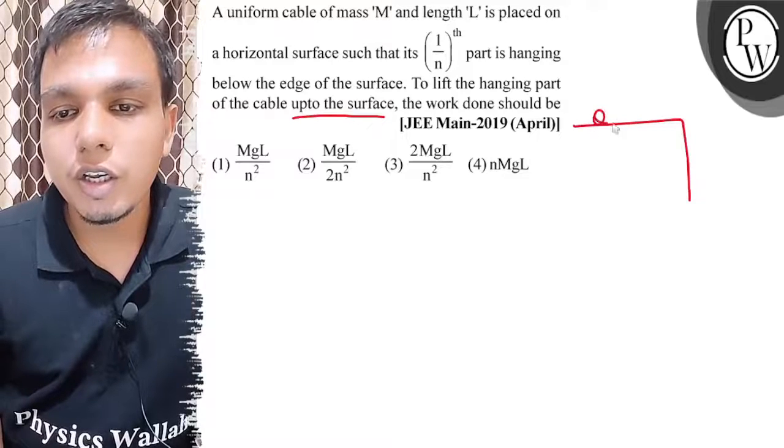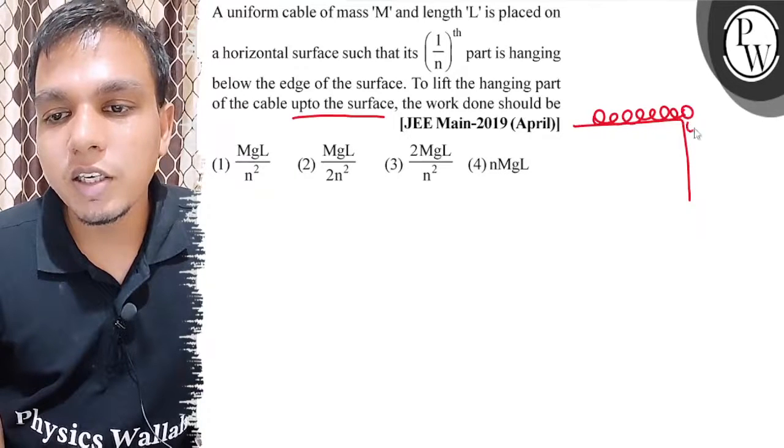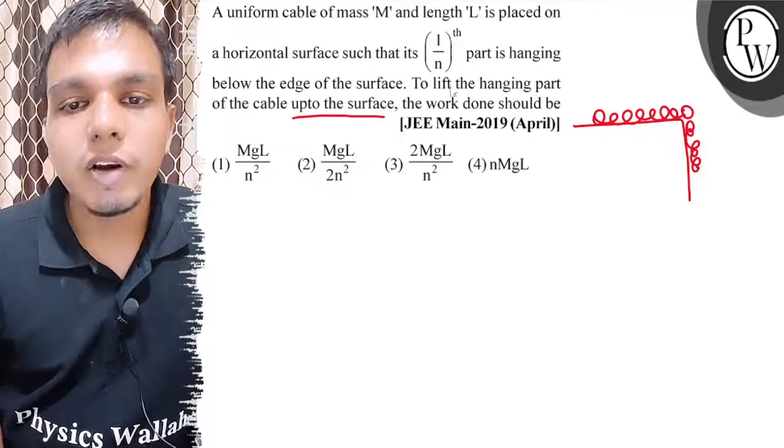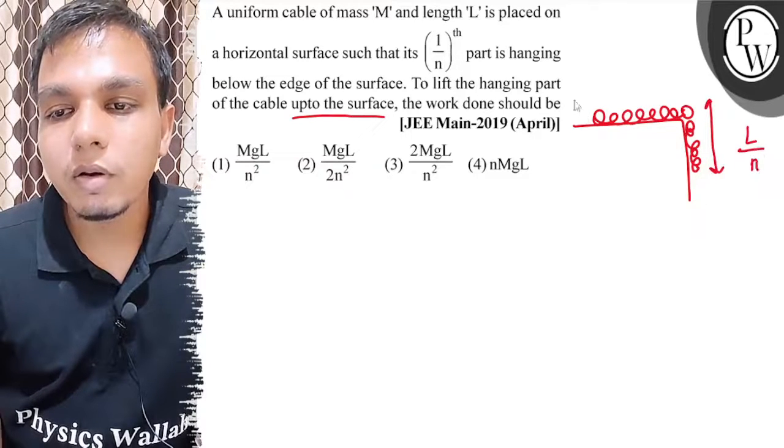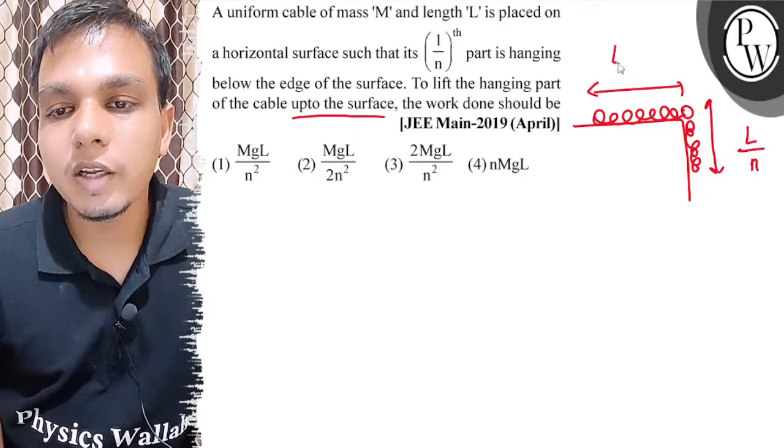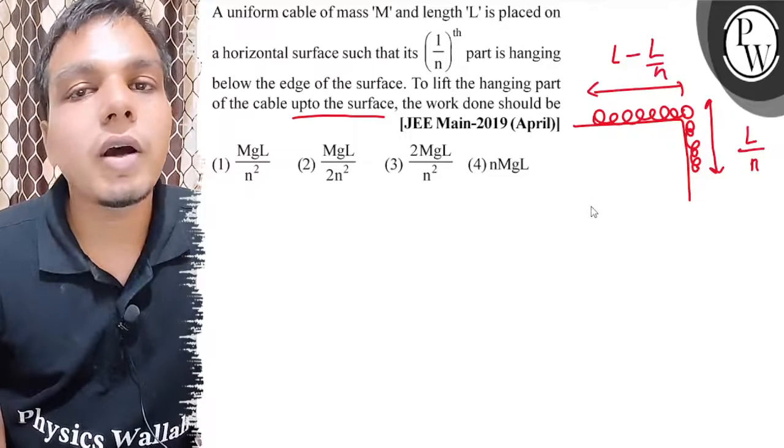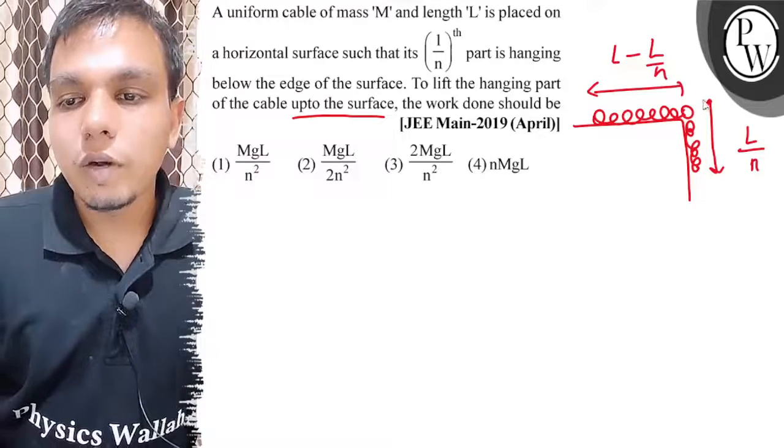We have a chain or cable which has total mass m and total length l. Its 1/n-th part means this distance we can call l/n. So this is our L minus l/n, because total length is l. So l/n-th part is hanging.